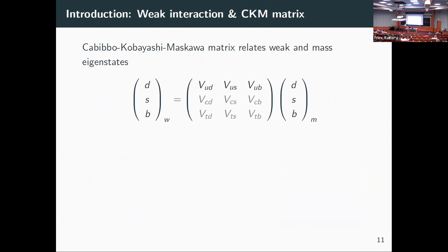Getting to the first topic: CKM unitarity, named after Cabibbo, Kobayashi, and Maskawa. It's mathematically a simple concept — just a three-by-three unitary matrix, like a complex rotation matrix between mass eigenstates (the states that actually propagate) versus the weak eigenstates (the states that actually undergo the interaction).